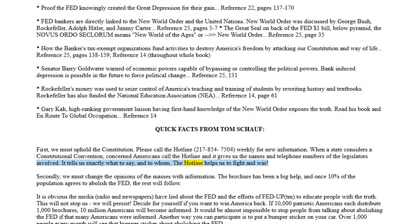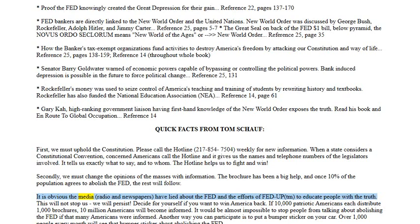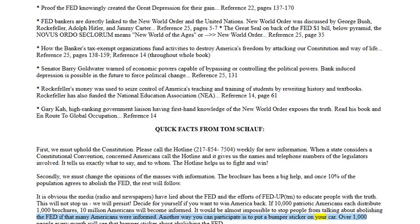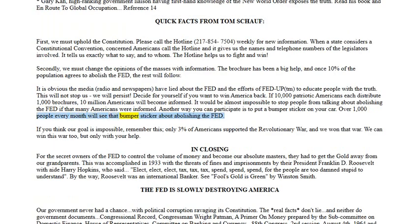Secondly, we must change the opinions of the masses with information. The brochure has been a big help, and once 10 percent of the population agrees to abolish the Fed, the rest will follow. The media, radio, and newspapers have lied about the Fed and the efforts of Fed Up to educate people with the truth — this will not stop us, we will persist. If 10,000 patriotic Americans each distribute 1,000 brochures, 10 million Americans will become informed. Another way to participate is to put a bumper sticker on your car — over 1,000 people every month will see that bumper sticker about abolishing the Fed.